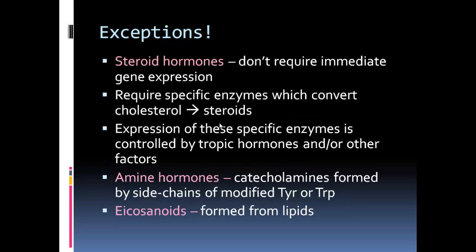Some exceptions: for steroid hormones, they don't require immediate gene expression. They require specific enzymes which convert cholesterol into steroids. The expression of these specific enzymes is controlled by tropic hormones and/or other factors. We also have to take into consideration amine hormones and eicosanoids, which are primarily lipids. Eicosanoids are lipids, and amine hormones are catecholamines.